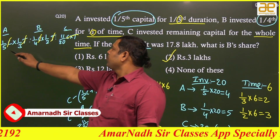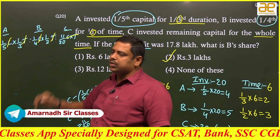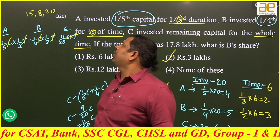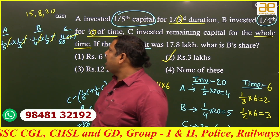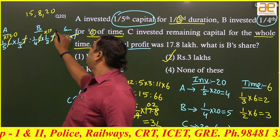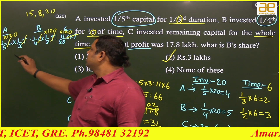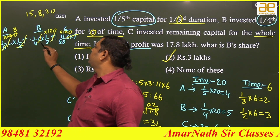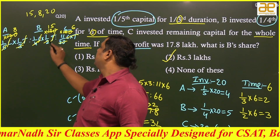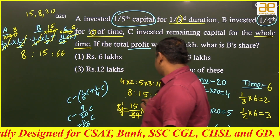After cancelling C and T, we have fractions 1/15 : 1/8 : 11/20. Take the LCM of 15, 8, and 20, which is 120. Multiply each term by 120: (120/15) = 8, (120/8) = 15, and (11×120/20) = 11×6 = 66. So the ratio is 8 : 15 : 66 — the same answer as before.